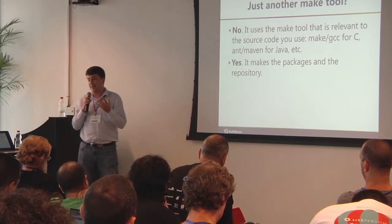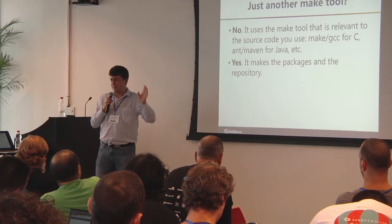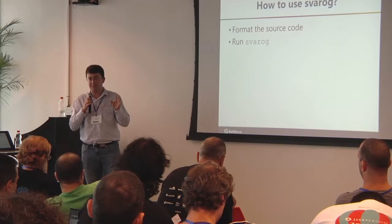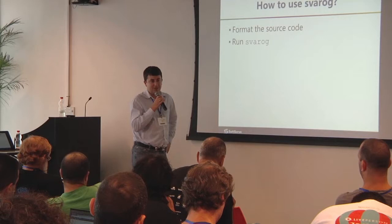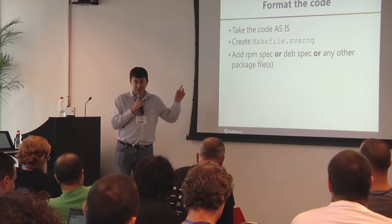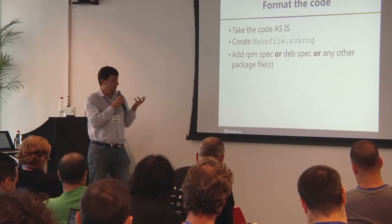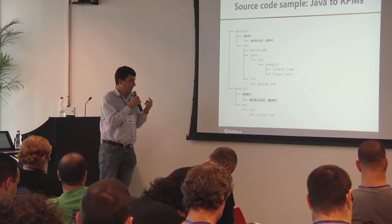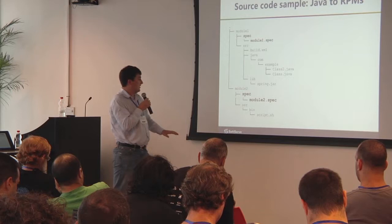What does this tool do, and is it another make tool? No — you still use Maven, you can use Rake, whatever else you use, but on top of it you can make packages: Debians, RPMs, any other package type you invent. Usage is simple: you format the source code by adding specific files and configuration, then run the Swarok command. Swarok will look for a makefile with the Swarok extension, which is a specifically formatted key-value file, and it will start building packages and repositories, either RPM or Debian, depending on how you define it.